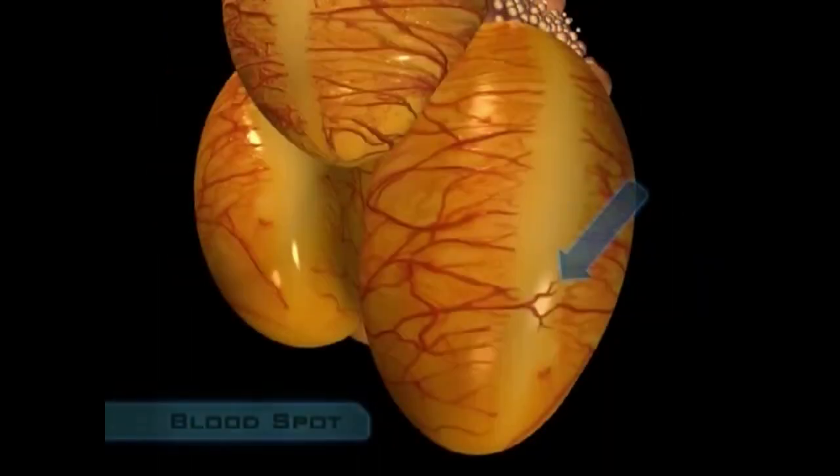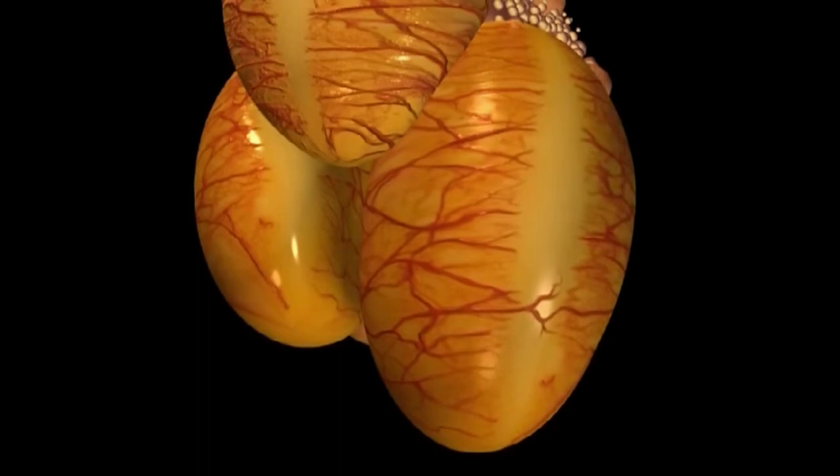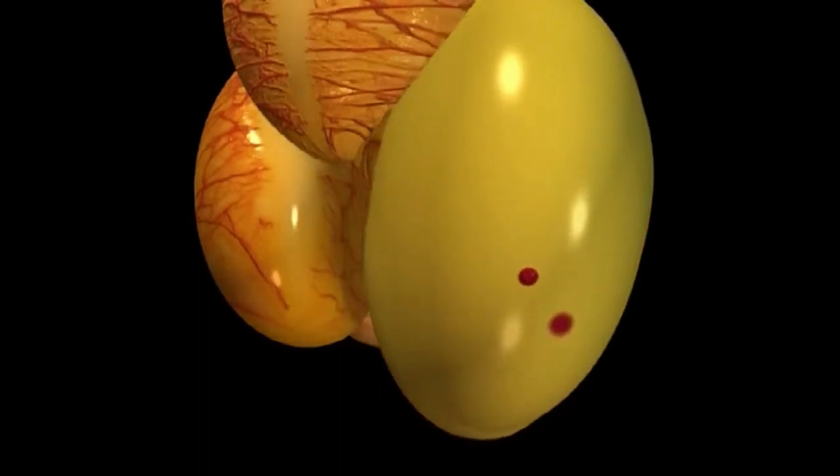If any blood vessels cross the stigma, a drop of blood may spot the yolk as it is released from the follicle.